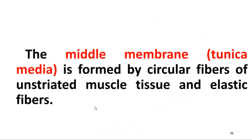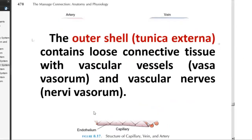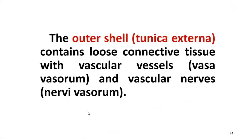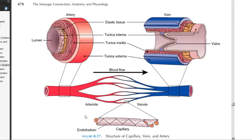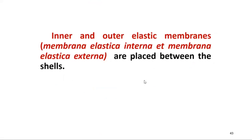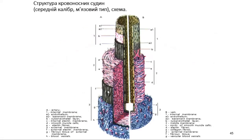The middle membrane, tunica media, is formed by circular fibers of unstriated muscle tissue and elastic fibers. The outer shell, tunica externa, contains loose connective tissue with vasa vasorum and nervi vasorum. For nerves themselves, there are nervi nervorum and vasa nervorum for vascularization and innervation. Inner and outer elastic membranes — membrana elastica interna and membrana elastica externa — are placed between the shells.